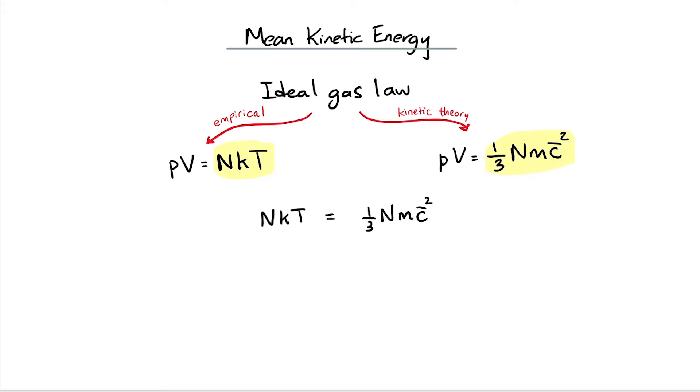NkT is equal to a third Nm times the mean square speed. We are going to use this to derive an equation for the average kinetic energy of a gas molecule. I'll just switch the two sides of the equation. It'll make sense why I've done this later on.